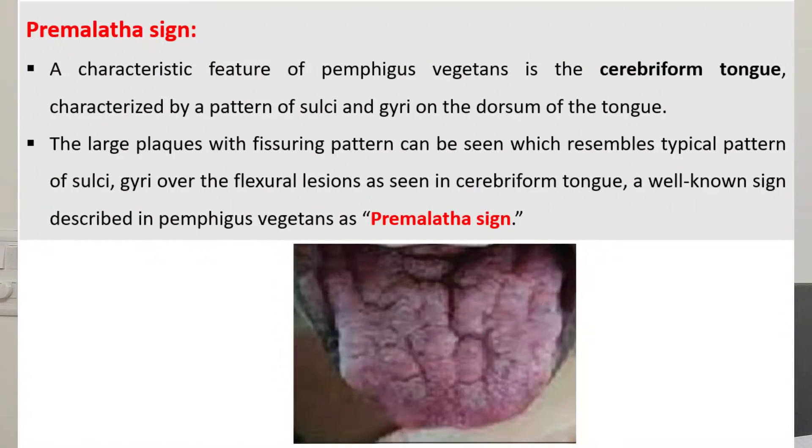Coming to Premlata sign: in cases of pemphigus vegetans, we can see lots of fissures or gyri on the surface of the tongue — the tongue is known as cerebriform tongue in these patients. This is also known as Premlata sign. It can also be elicited in lesion areas such as the axillary regions, where gyri and sulci type lesions are present.